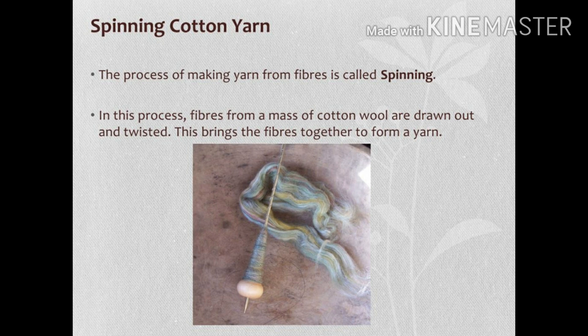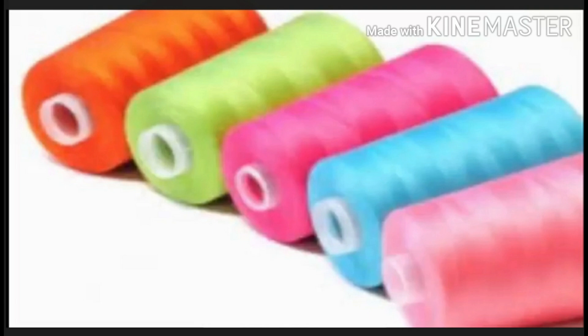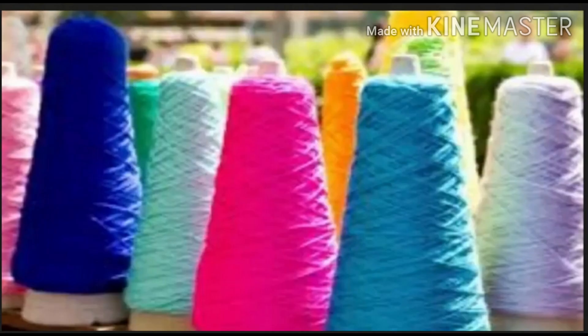This spinning process can be done manually by using a takli or other equipment, or it can also be done using machines. After spinning cotton yarn or wool, we get these kinds of reels — you can call them thread as well. Very big reels are obtained which can again be transformed into fabrics.